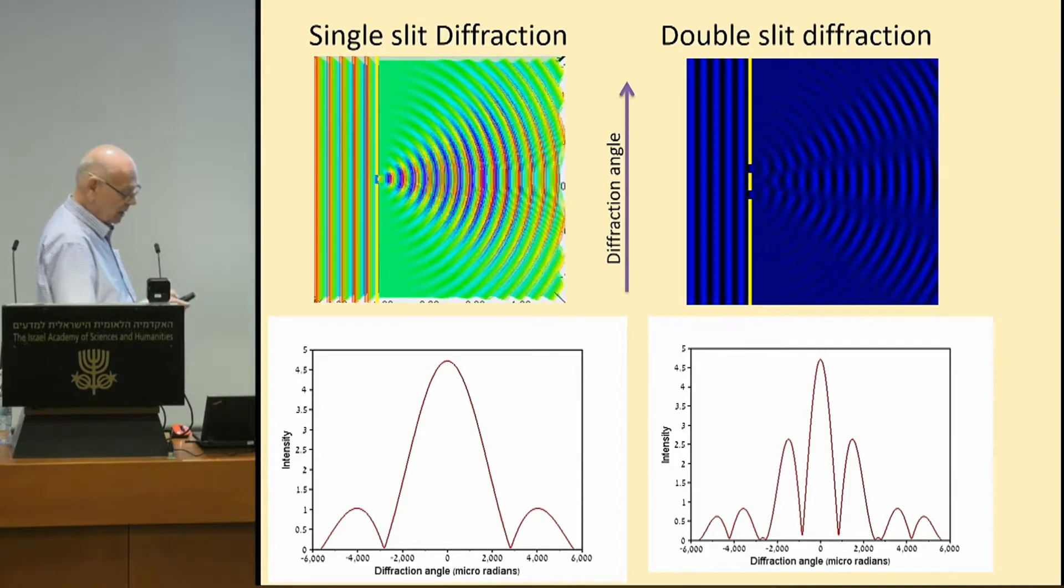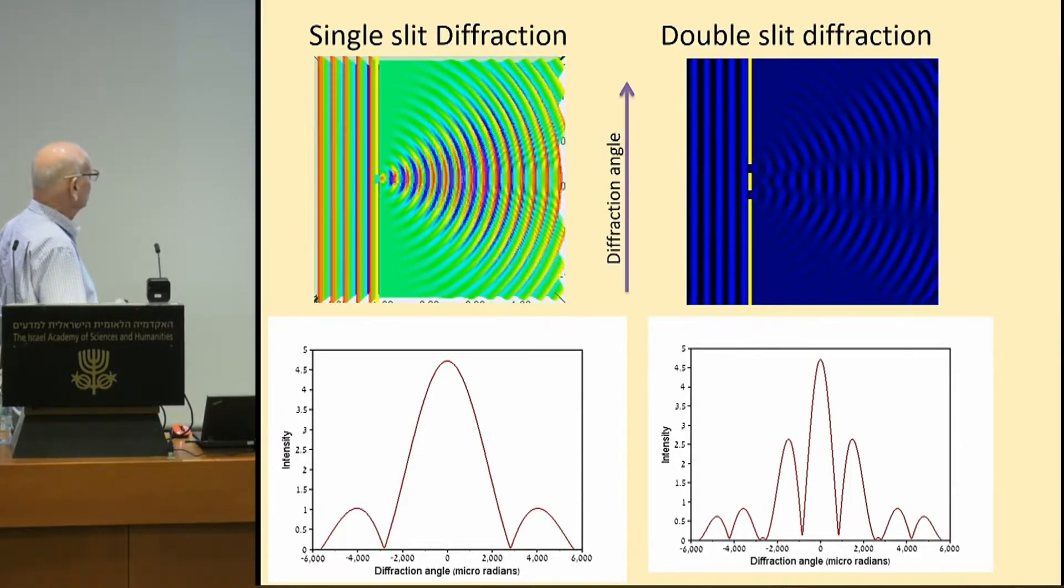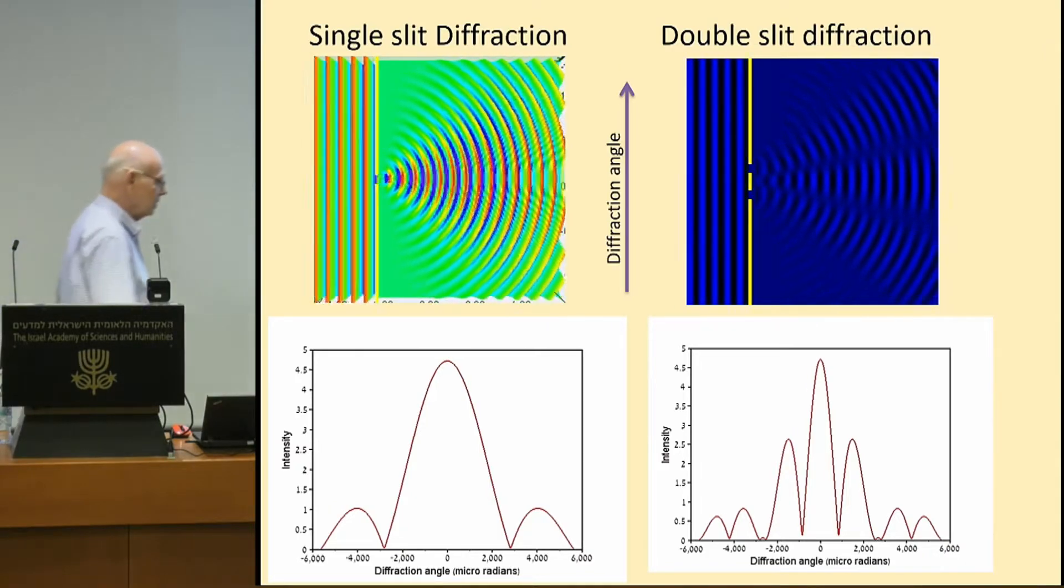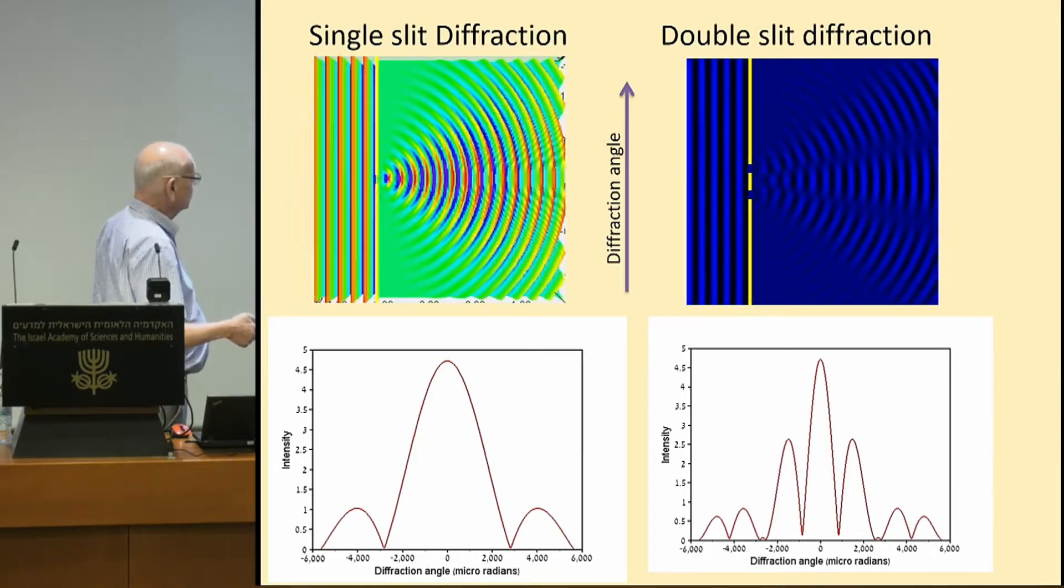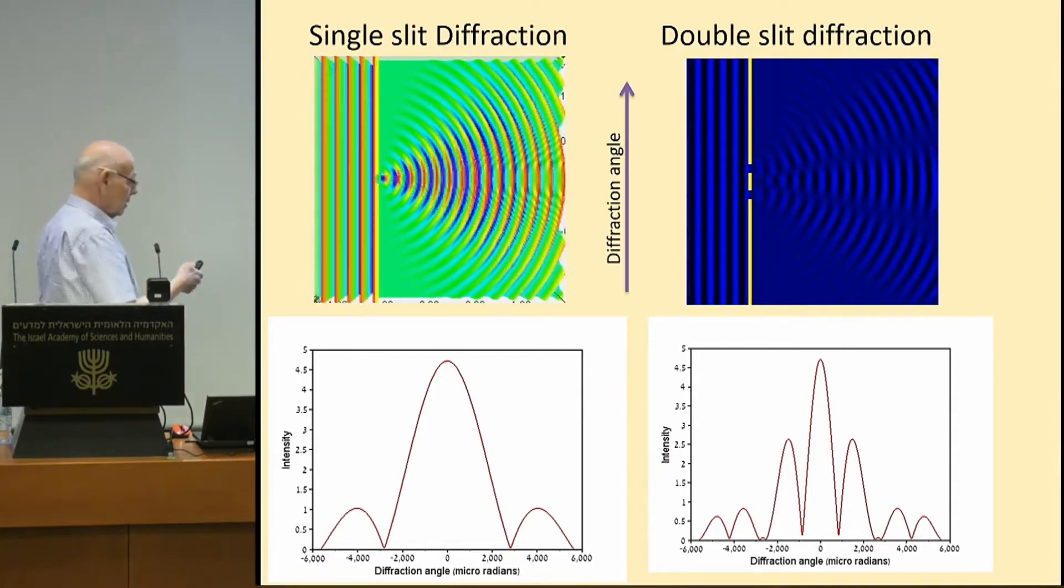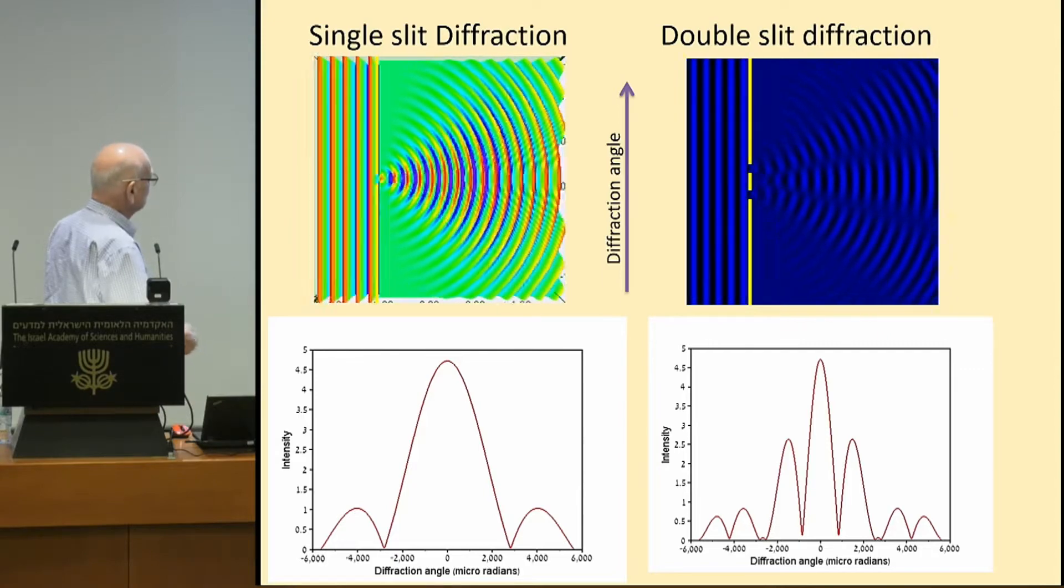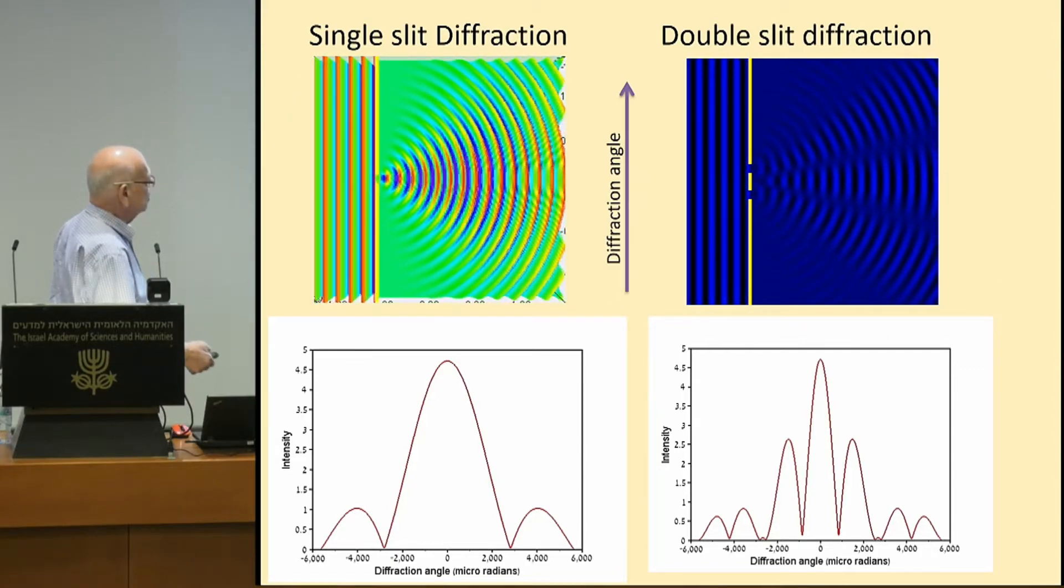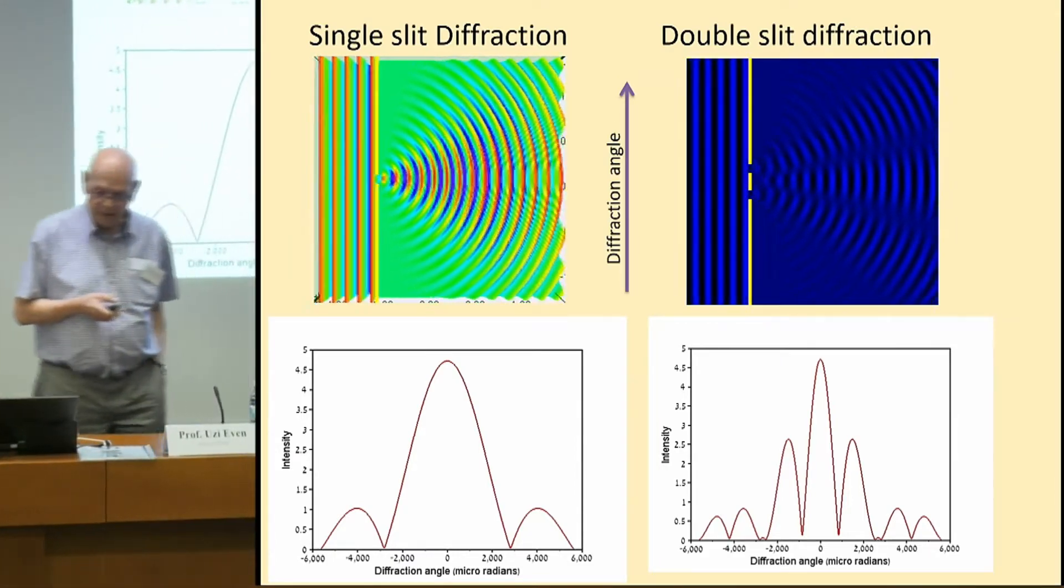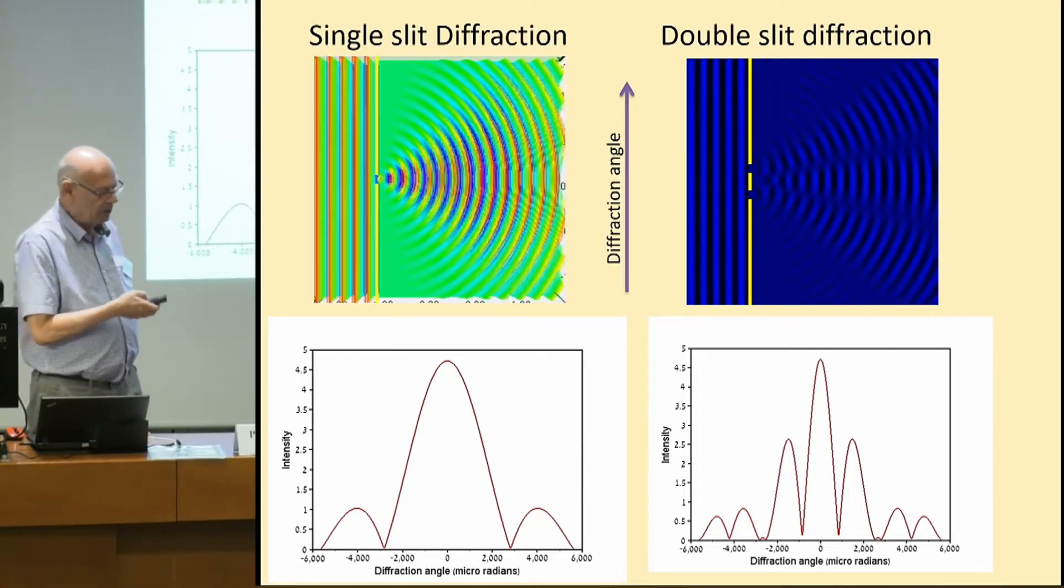What you see in the upper two slides is a simulation of a wave propagating from the right, a plane wave going through a slit and emerging as a spherical wave. And this represents what happens when you have two slits. You see the interference patterns. And if we cut and plot the intensity on the screen here, this is a single slit diffraction pattern and this is a two slit diffraction pattern. And we can continue with that.